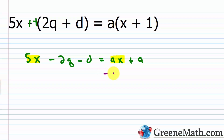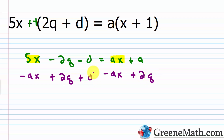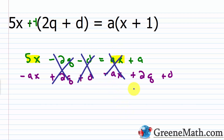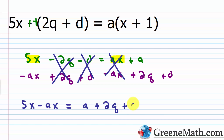Now I subtract AX from each side, add 2Q to each side, and add D to each side. After canceling, on the left I have 5X minus AX, and on the right I have A plus 2Q plus D.